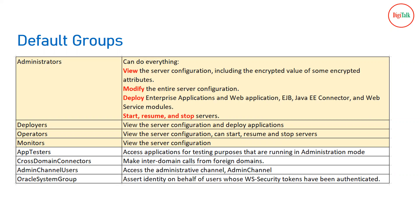Apart from the four main roles, there are additional groups used less frequently. AppTesters is for accessing applications in administrative mode for testing. Cross Domain Connectors is used when calls are required from one domain to another for cross-domain communications. Admin Channel Users access the admin channel when it is enabled. The OracleSystemGroup asserts identity on behalf of users whose WS-Security tokens have been authenticated — this is an advanced option.